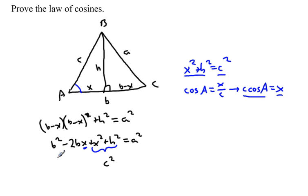So we're going to make another substitution in that spot. So that'll leave us with b squared minus 2 times b times c times the cosine of A plus c squared equals a squared.